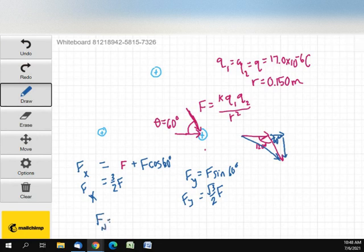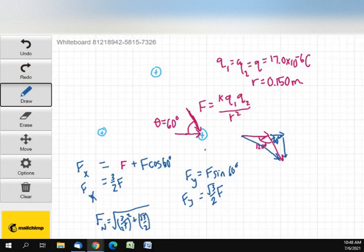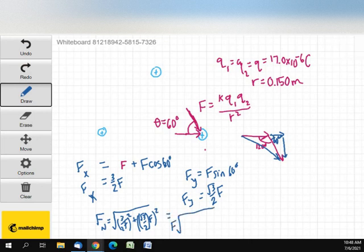So, F is going to be the square root of nine-fourths plus three-fourths, which would be F times the square root of nine-fourths, which is three. So, it's going to be the square root of three times F.